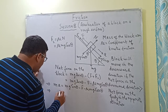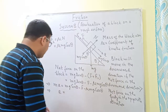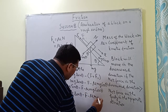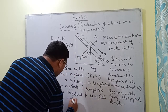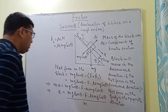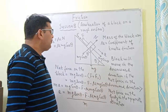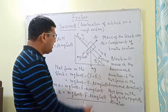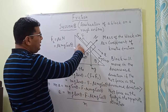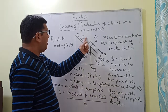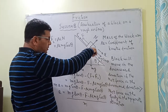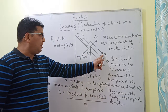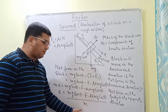If the acceleration of the block is a, then ma equals mg sin theta minus F minus mu mg cos theta. Therefore, the acceleration of the block in the downward direction equals mg sin theta minus F minus mu mg cos theta, all divided by m. This is the acceleration when the block moves downward along the inclined plane despite the applied upward force F.